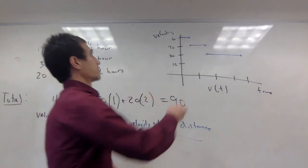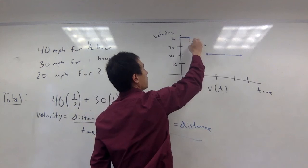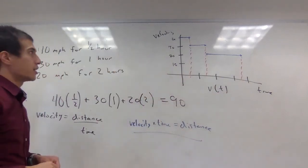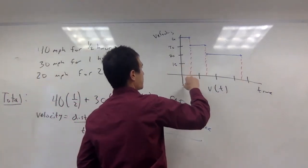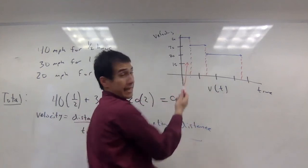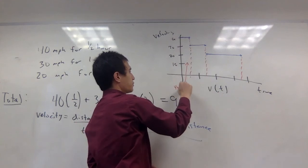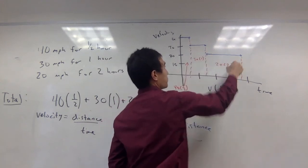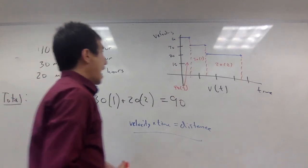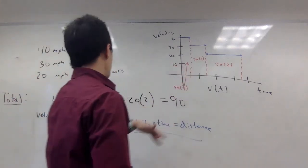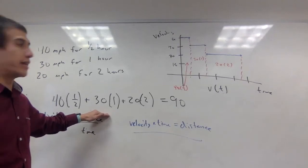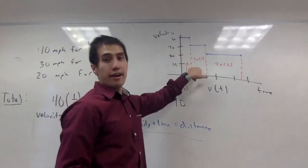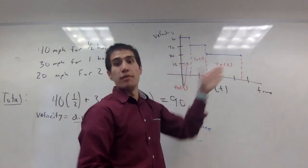It kind of looks like rectangles. If I fill in these imaginary lines, what you notice is that the area of this rectangle is height times base — so it's 40 times one half. The area of this rectangle is 30 times one, and the area of this rectangle is 20 times two. These areas of these rectangles are telling me exactly the distance that I traveled. The total distance traveled is the sum of these areas.